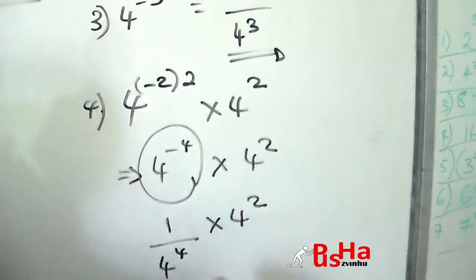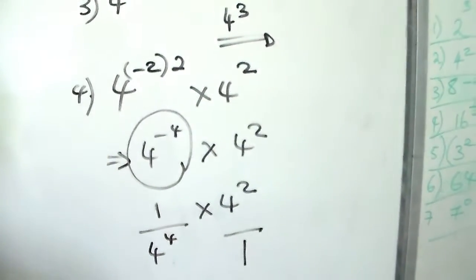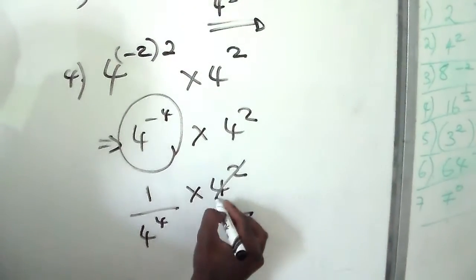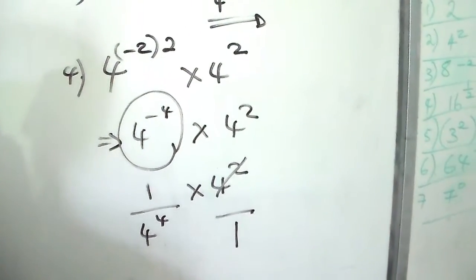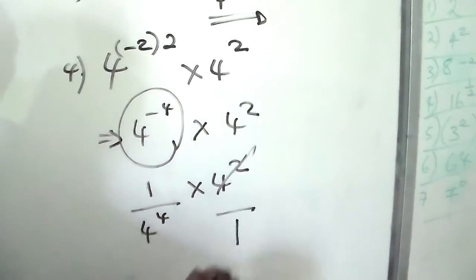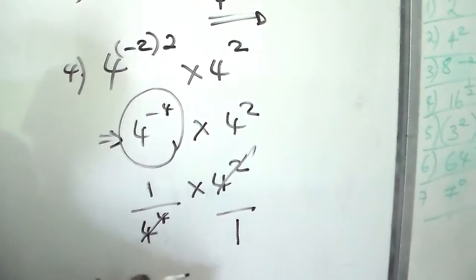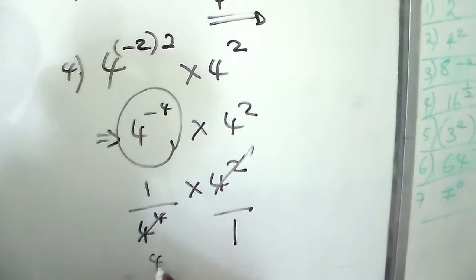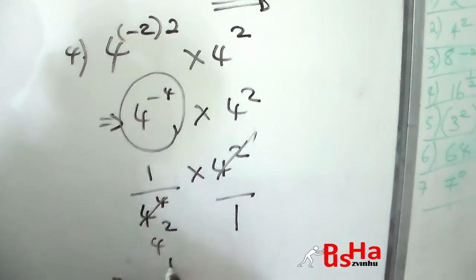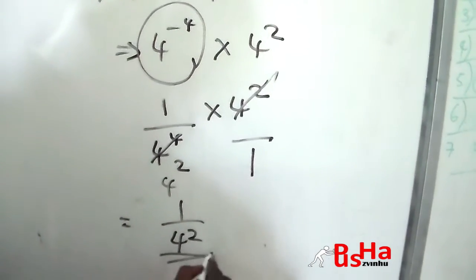Using the law of multiplication, we cancel the powers that cancel each other. Four to the power of two into four to the power of two gives one, and four to the power of two into four to the power of four gives four to the power of two. So we get one over four to the power of two as our answer.